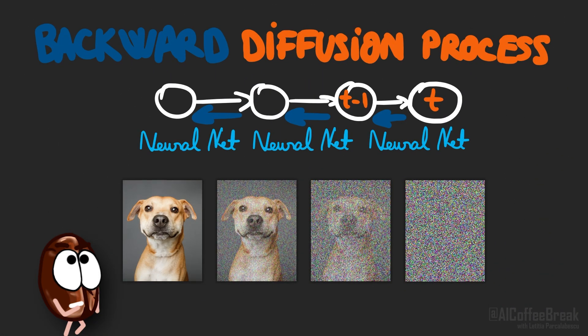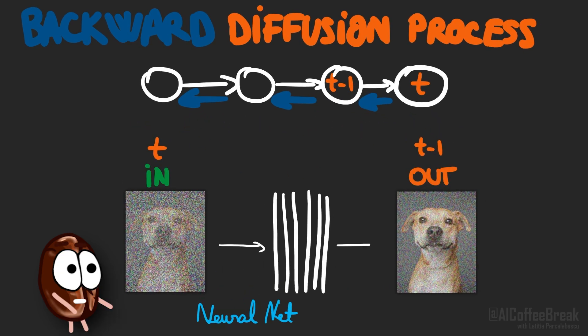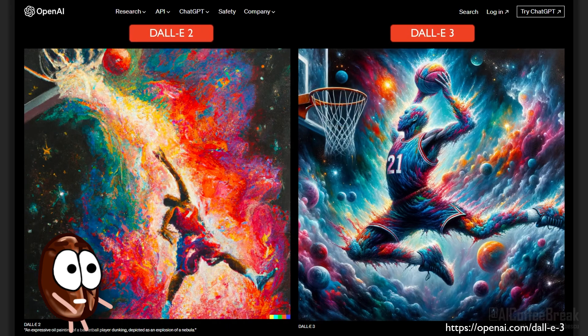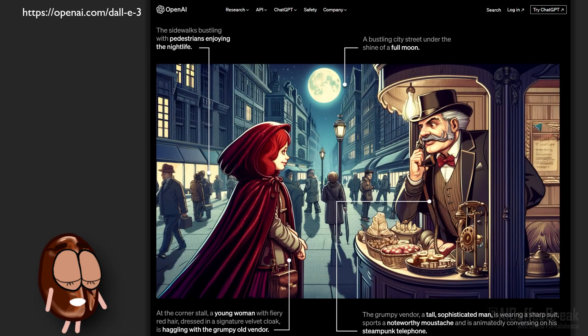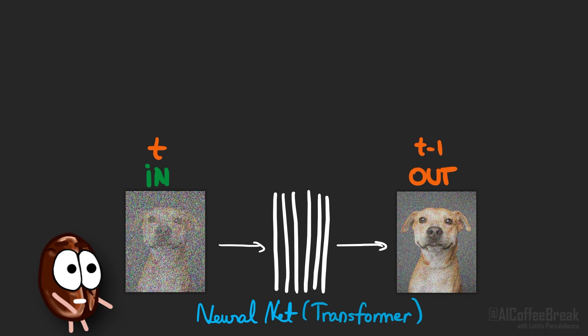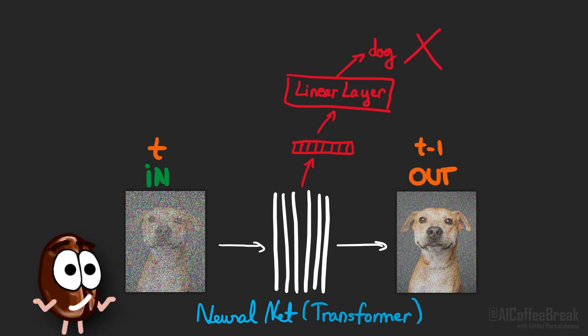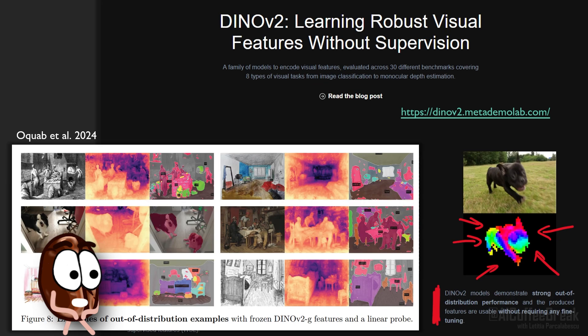First, let's understand the problem. Diffusion models are neural nets trained to generate images from noise and are incredibly powerful at it — just think of Stable Diffusion, DALL-E, Midjourney, or any other diffusion model you might use these days. They've produced some of the most realistic AI-generated visuals we've ever seen. But here's the catch: their visual representations often lack the abstractions needed for tasks other than image generation, like classifying images or identifying objects. It's not like diffusion models' representations are unusable for these tasks, but they're definitely not great, especially since we know that there are self-supervised models that are much, much better at these tasks.